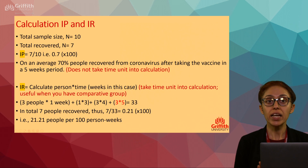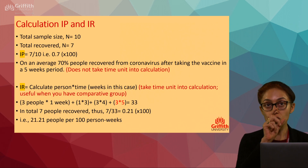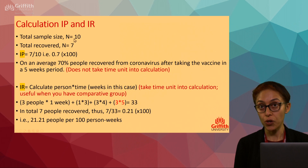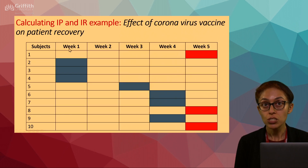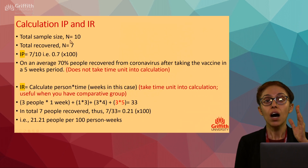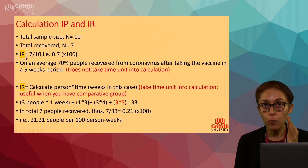First, calculating incidence proportion (IP). Total sample size is 10 participants. Seven of them recovered (the blue ones in the table); three did not. So your incidence proportion is a quick snapshot: 7 divided by 10.